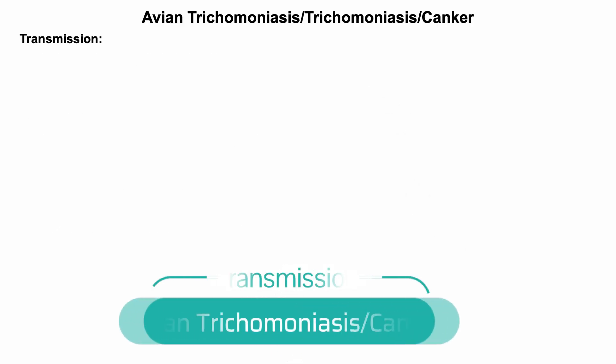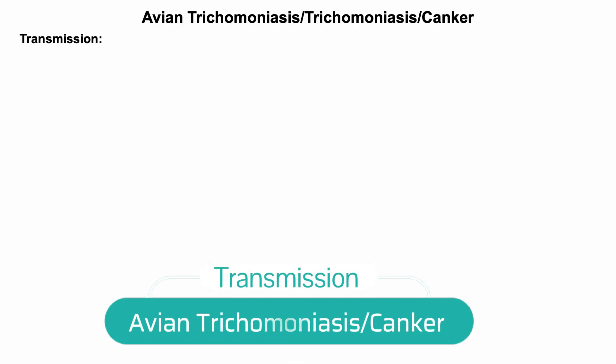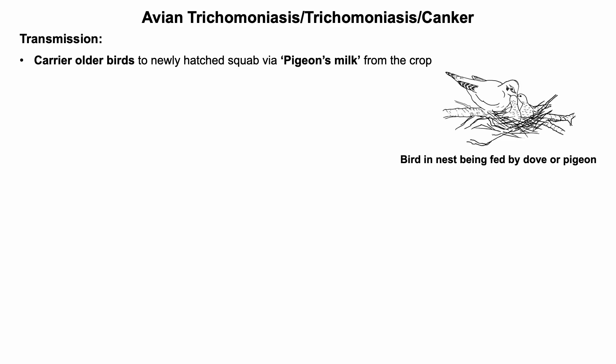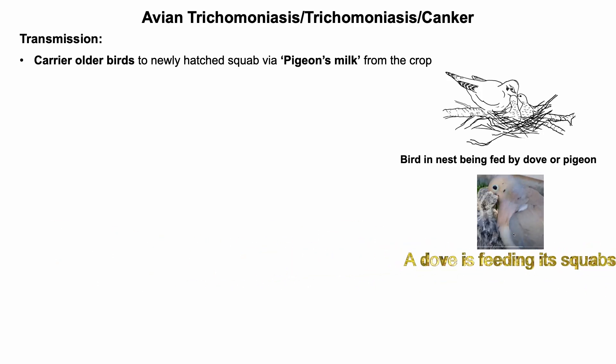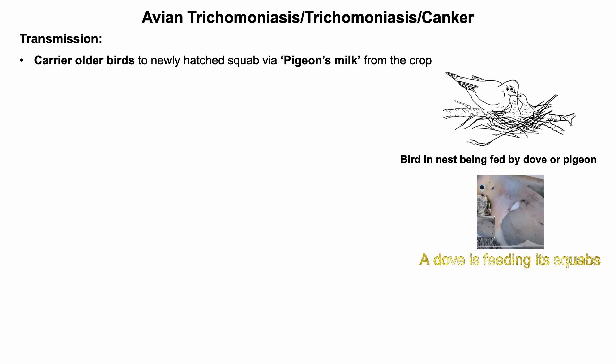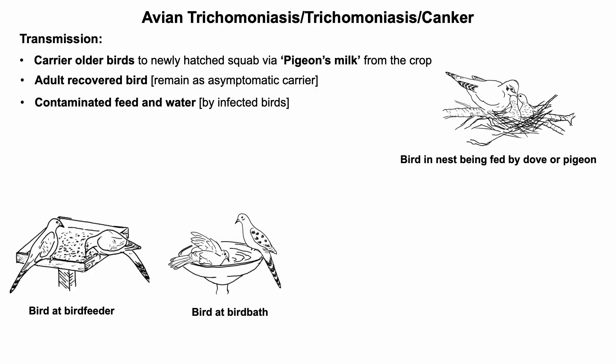Regarding transmission of avian trichomoniosis or canker: there are no cyst or resistant stages of this parasite passed in the feces, unlike other intestinal protozoal infections. So the most common way of transmission is through pigeon milk or crop milk. If the parents are affected, the squab will also be affected during feeding.